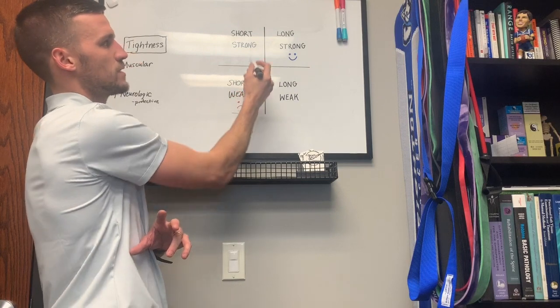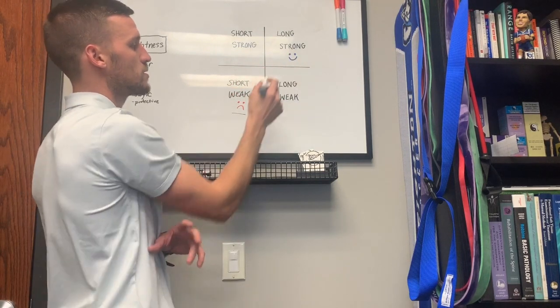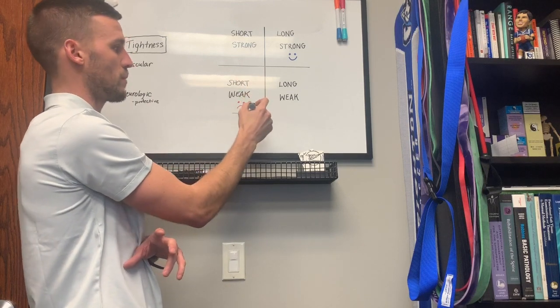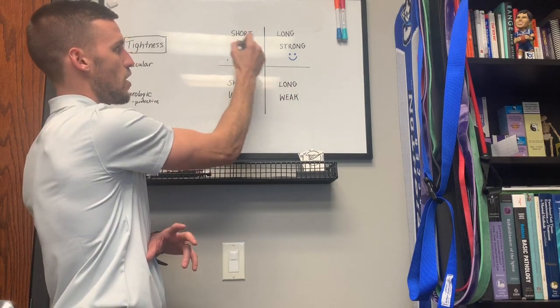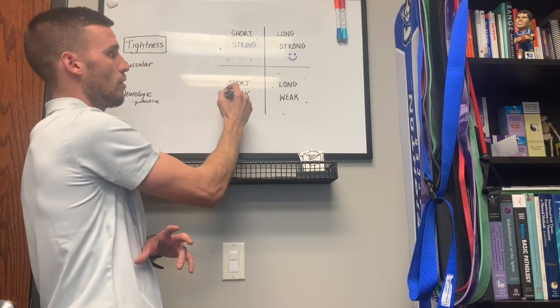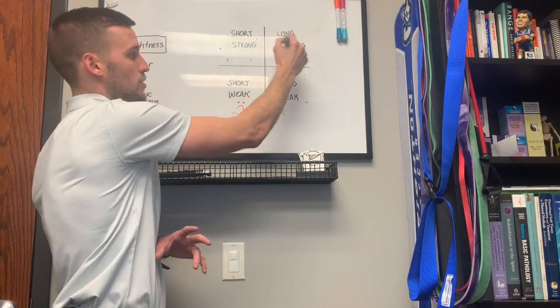Now opposite of that, the best place to be is long and strong. That's why we have a little smiley face. So obviously patients present, athletes, whatever, general population, they tend to fall in these regions. Obviously most likely to get injured here, less likely to get injured here.